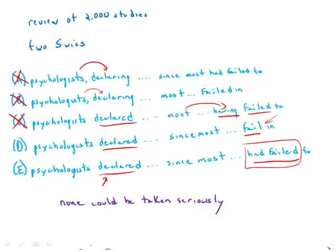Another difference is the preposition that follows: 'fail to' versus 'fail in.' When you fail in something, that means you're doing it but not doing a very good job — you fail in the process. 'Fail to do something' means you simply don't do it. These folks didn't control for variables such as social class and family size — it doesn't sound like they were trying and did a bad job. They simply did not do it. If they did not do it, what we need is 'fail to.' So for a variety of reasons, E is the correct answer.